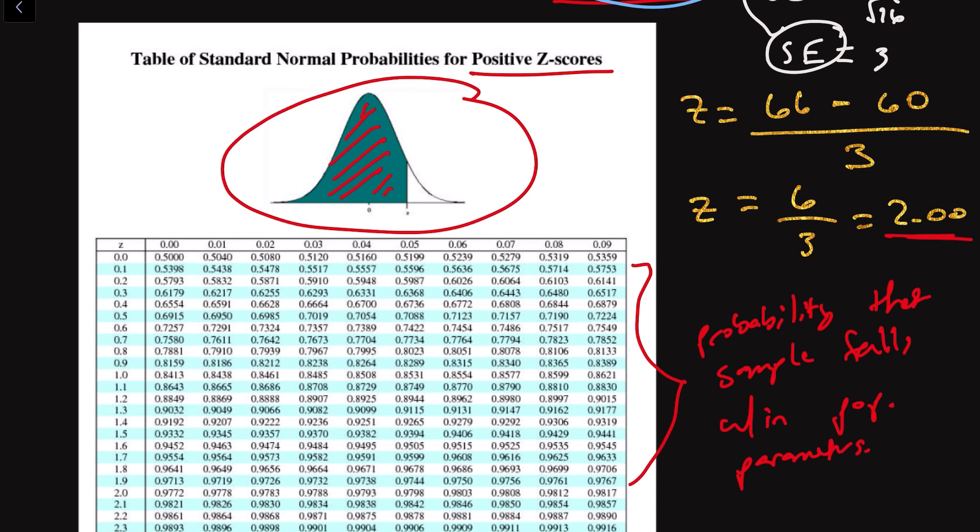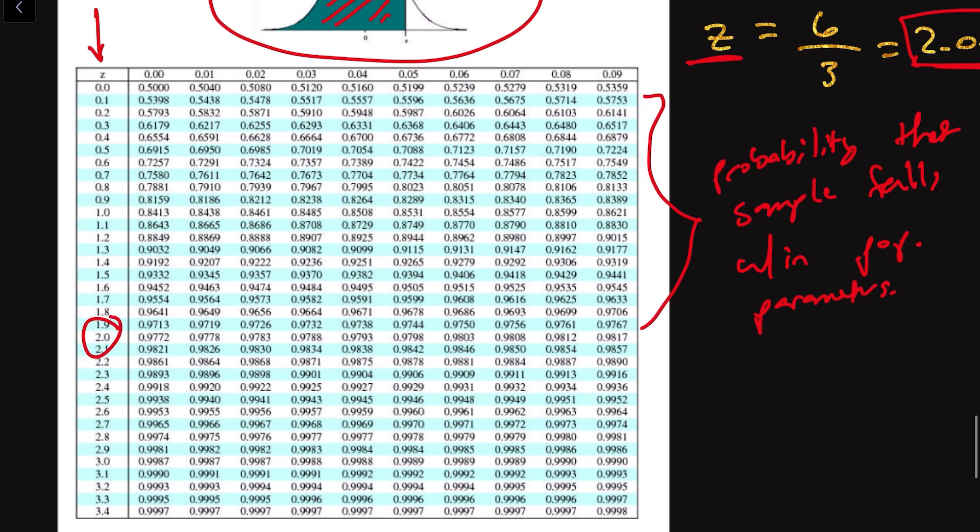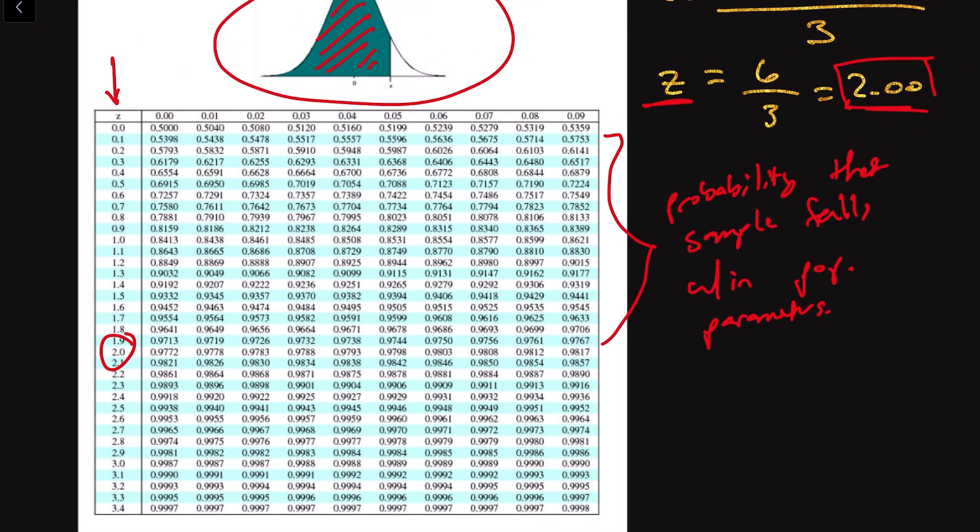With that, now what we can say is let's figure out what probability maps to a Z-score of 2.0. We first look at this first column here. We're going to go down to this line right here. Because our value was 2.00, we are going to also look at this first column right here. We're going to see that this corresponds to a probability of 0.9772.